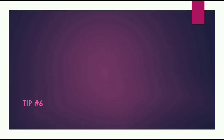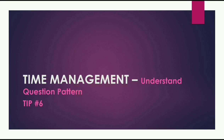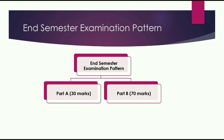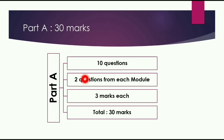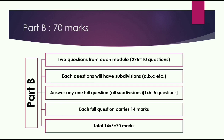Tip number six is time management. When going into the exam, we want to attempt maximum questions for maximum score. For that, understand the question pattern. In the 2019 scheme, Part A is 30 marks — all questions compulsory — and Part B is 70 marks. Part A has 10 questions at 3 marks each, with 2 questions per module. Part B has one full question per module, divided into subdivisions A and B.